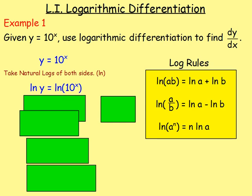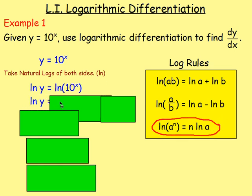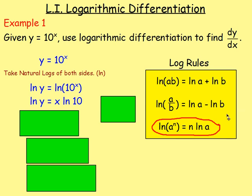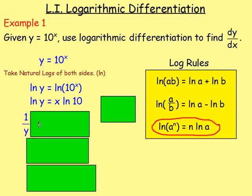Taking the natural logs of both sides gives ln(y) = ln(10^x). Using the log rule, we can bring the x down in front, so that becomes ln(y) = x·ln(10). Now we need to differentiate this.